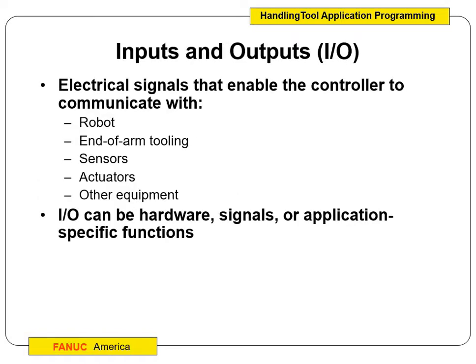After this, we should gain a general understanding about using I/O signals, different types of hardware that go inside the control cabinet, and how we can monitor our controller I/O and set up and apply inputs and outputs. A lot of this should be a common thing we've done with the electrical class and the digital electronics that most of you guys took. Electrical signals are what enable the controller to communicate with multiple different things. So the robot, the end of our tooling, different sensors, actuators, any other equipment. Our I/O can be hardware signals or application-specific functions.